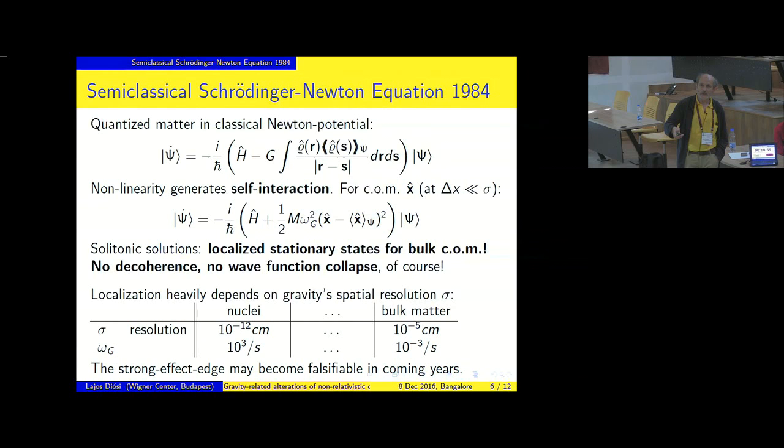Now again, we see that the localization will heavily depend on gravity's spatial resolution sigma. Look at this quantity, omega g, which looks like an oscillator frequency here, and it generates localization. It generates the solitonic solutions. Actually, you can, without paper and pen, you can guess what the solitonic state must be, because this Hamiltonian is a harmonic oscillator Hamiltonian. So you can solve it easily for the ground state.